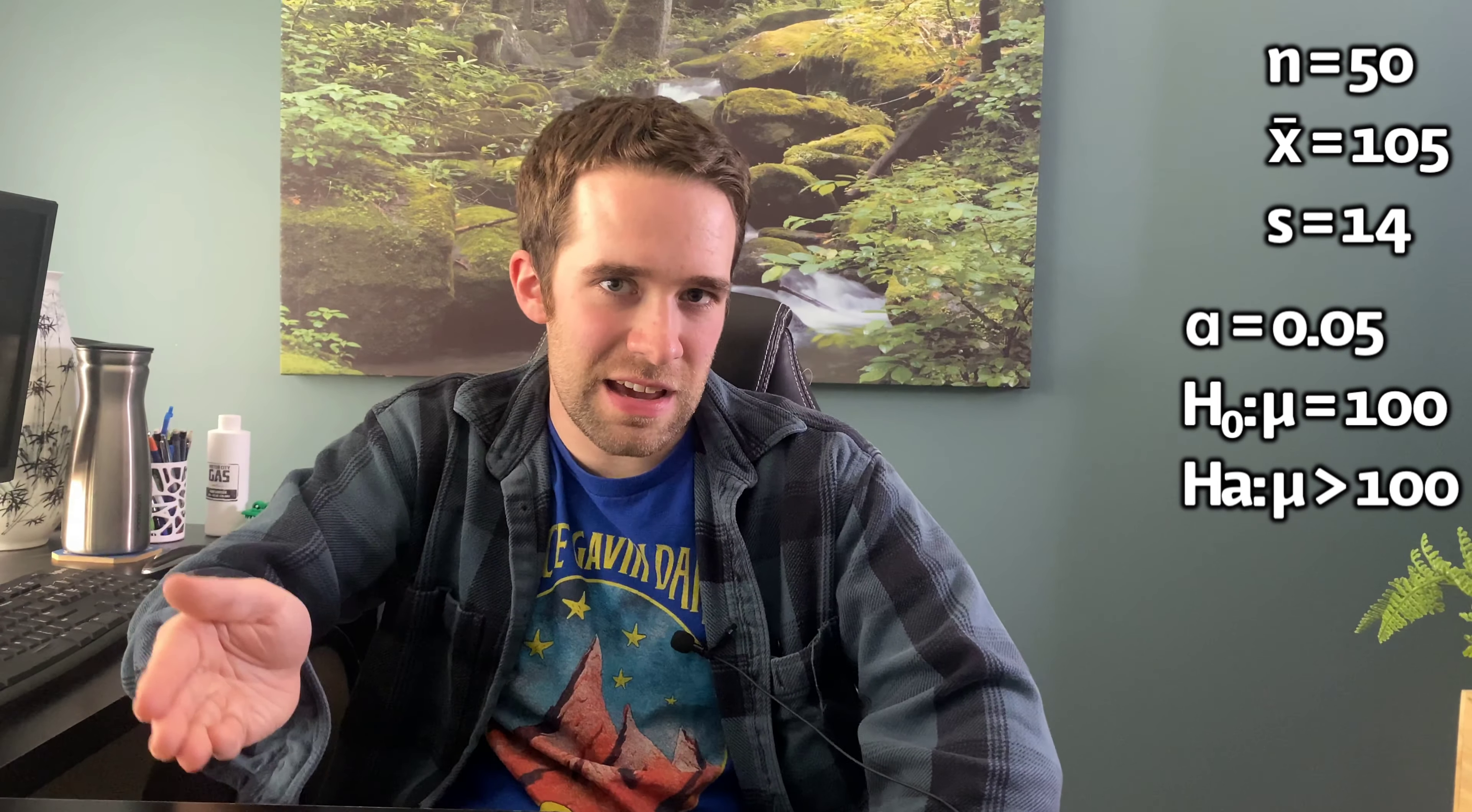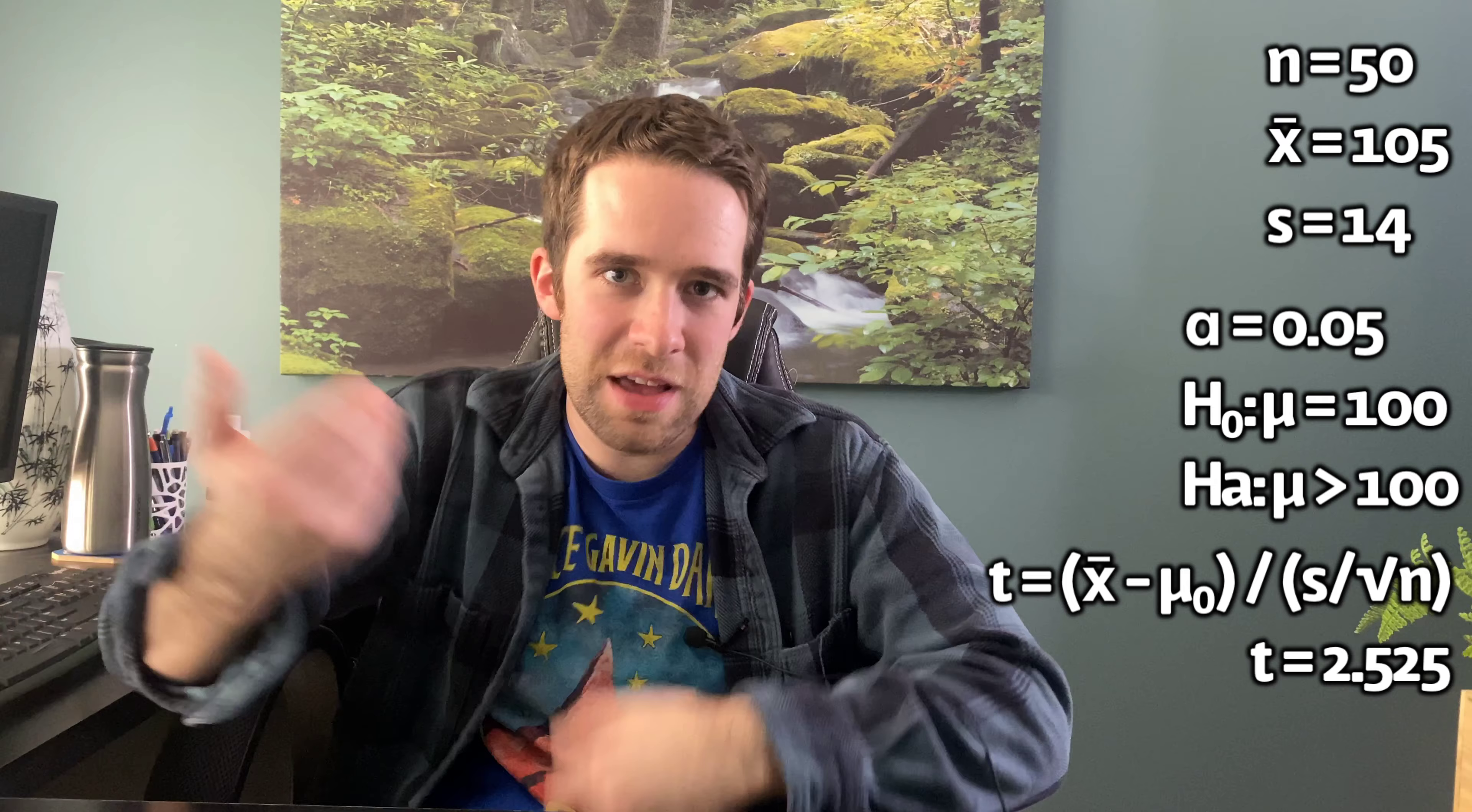Our test statistic T is equal to X bar minus mu naught over the standard error of X bar, where again, standard error of X bar is S divided by the square root of N. Plug in and do the math, and we get T equals 2.525.